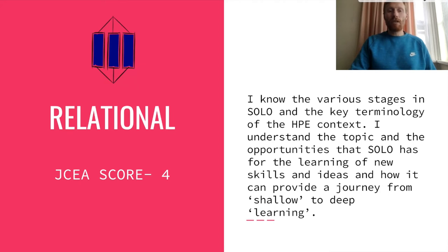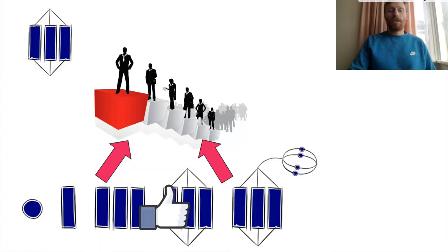If you're at a relational aspect, or a JCA score of four: I know the various stages in SOLO and the key terminology of the health and PE context. I understand the topic and the opportunities that SOLO has for learning new skills, and how it can provide a journey from shallow to deep learning. At the relational level, you know all the stages of SOLO and the key language used in the topic, you can put your hand up in class and provide good answers, and you can evaluate your use of SOLO and understanding of the topic through your Google form.